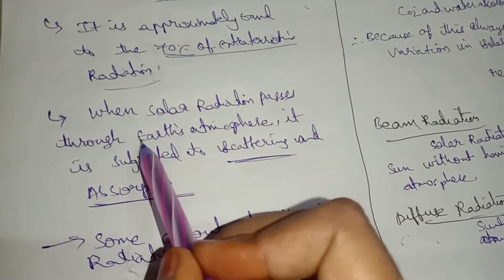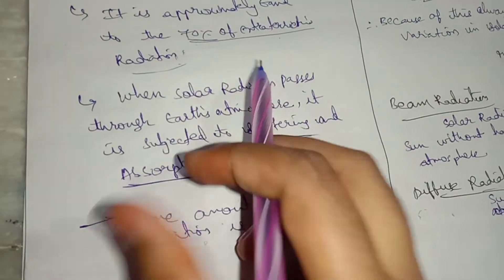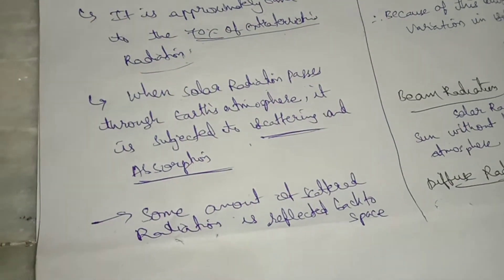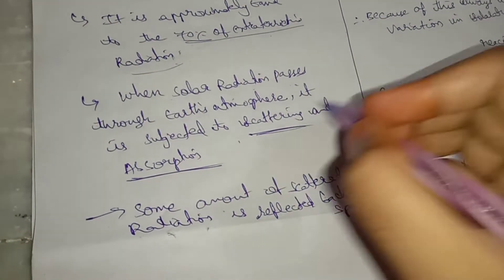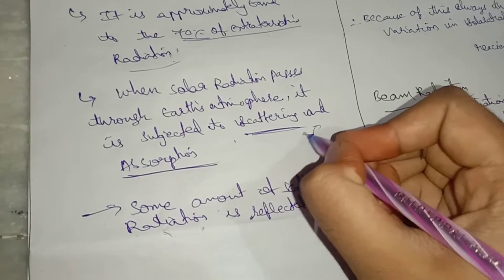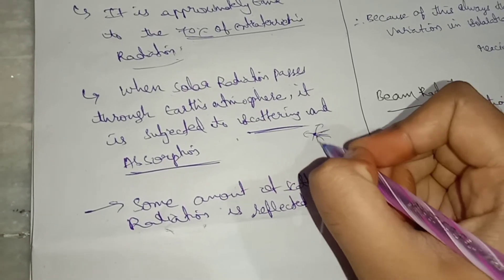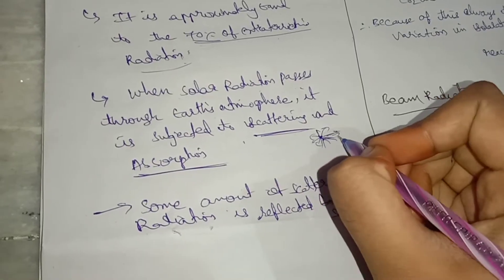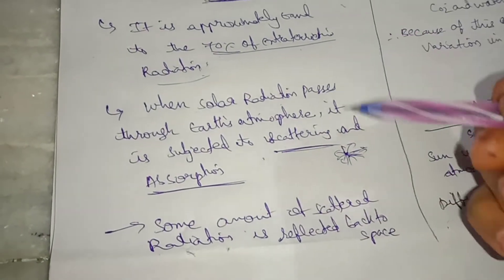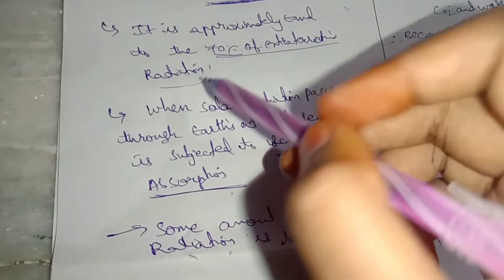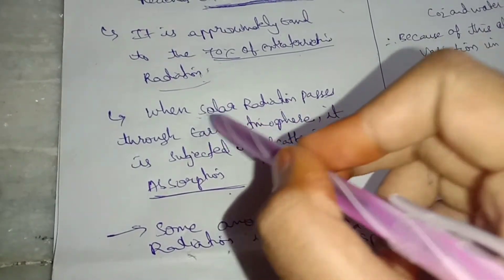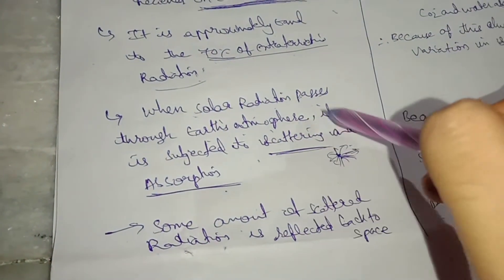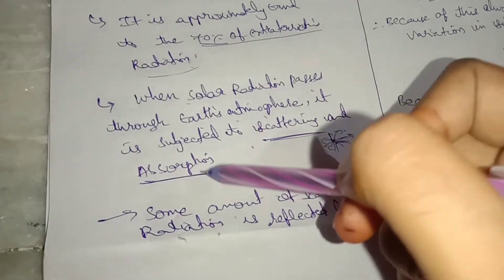When solar radiation passes through the earth's atmosphere, it is subjected to scattering and absorption. Scattering means the radiation spreads out in different directions. When solar radiation is passed through the earth's atmosphere, it is subjected to scattering and absorption.